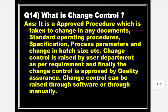Next is: What is Change Control? Answer: Change Control is the approved procedure which is taken to make a change in any documents, standard operating procedures, specifications, process parameters, and change in batch size, etc. Change control is raised by the user department as per requirement and finally the change control is approved by Quality Assurance.